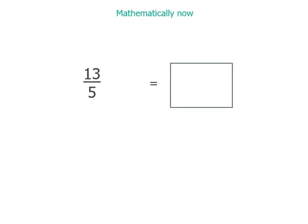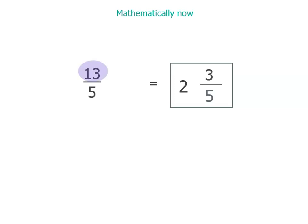Let's work this out without the number line. We've got fifths, so we know the fraction part of our mixed number will have fifths. What we do is take our numerator and divide by the denominator — 13 fifths means 13 divided by 5. 13 divided by 5 gives us 2 and some left over. Two fives are 10, so 2 is our whole number. We've allocated 10 of the 13 fifths, and we've got 3 fifths left.